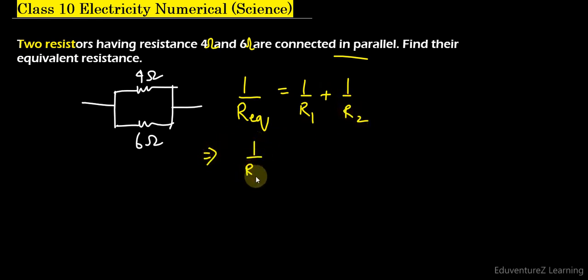1 by R equivalent is equal to 1 upon 4 plus 1 upon 6 and the LCM is 12, 4 into 3, 6 into 2.